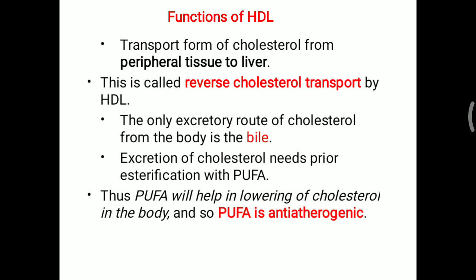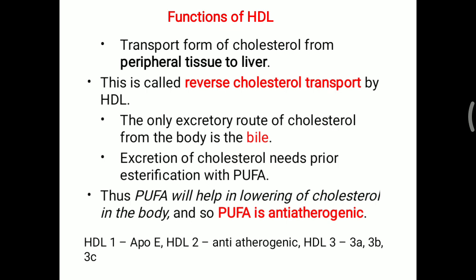PUFA helps in lowering the overall cholesterol level in the body and is therefore considered anti-atherogenic in nature. At least one-third of PUFA is always needed in our body. HDL1 mostly contains ApoE. HDL2 is considered anti-atherogenic in nature. HDL3 has three sub-fractions: 3a, 3b, and 3c. HDL is thus of three types: HDL1, HDL2, and HDL3.